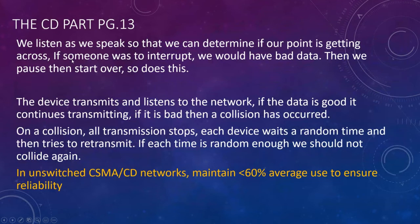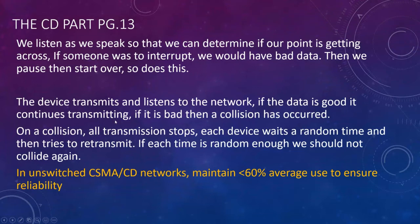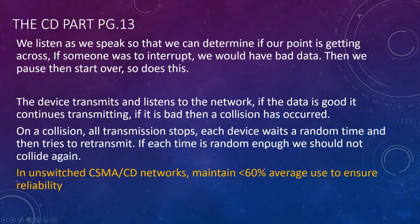The collision detection part: we listen as we speak. If someone interrupts, we have bad data — we've heard somebody talk over us. We pause and start over. The device transmits, listens to the network, and if the data is good it continues to transmit; if bad, a collision has occurred and transmission stops. Each device then waits a random time and retries. If each wait time is random enough, theoretically we should not collide again.